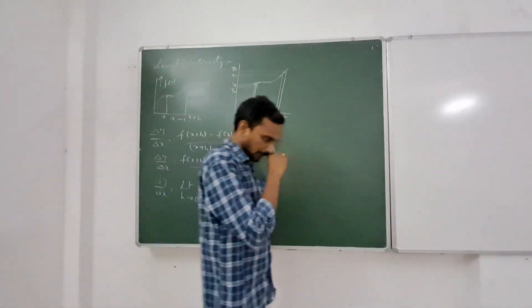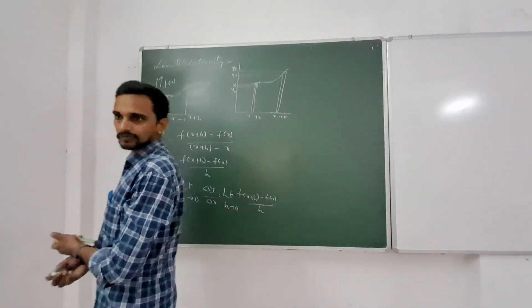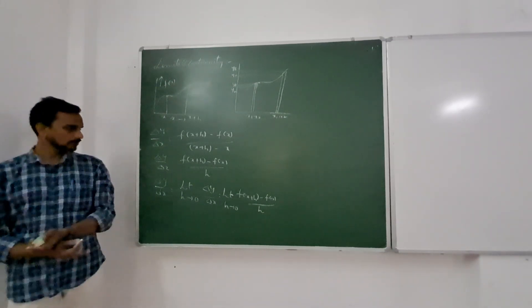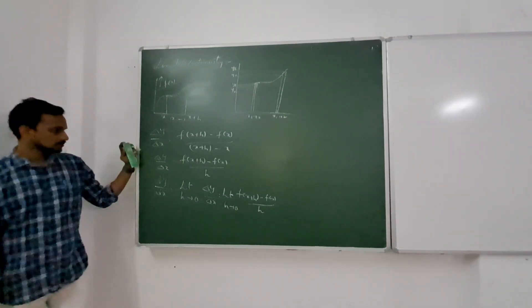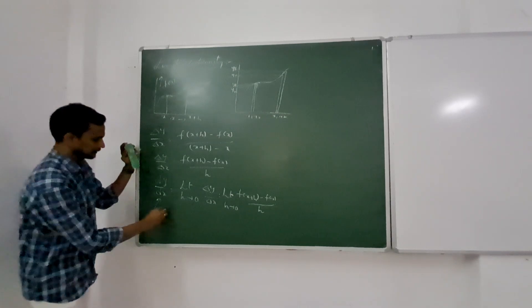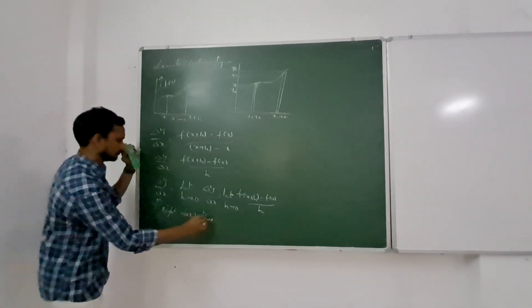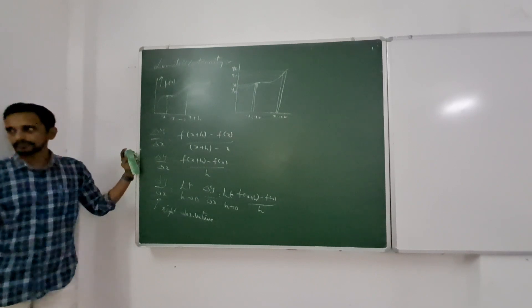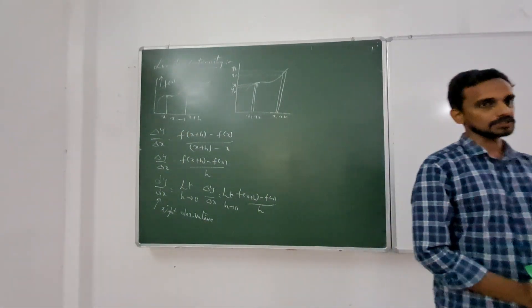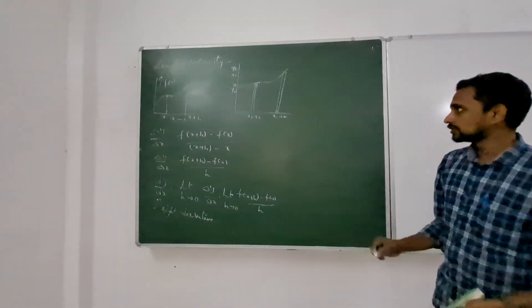So, derivative is defined as the limit h tends to zero, f of x plus h minus f of x by h. This is called actually right derivative, means we are taking the interval on the right side of the point we are considering. h is positive. So, this is the right interval.